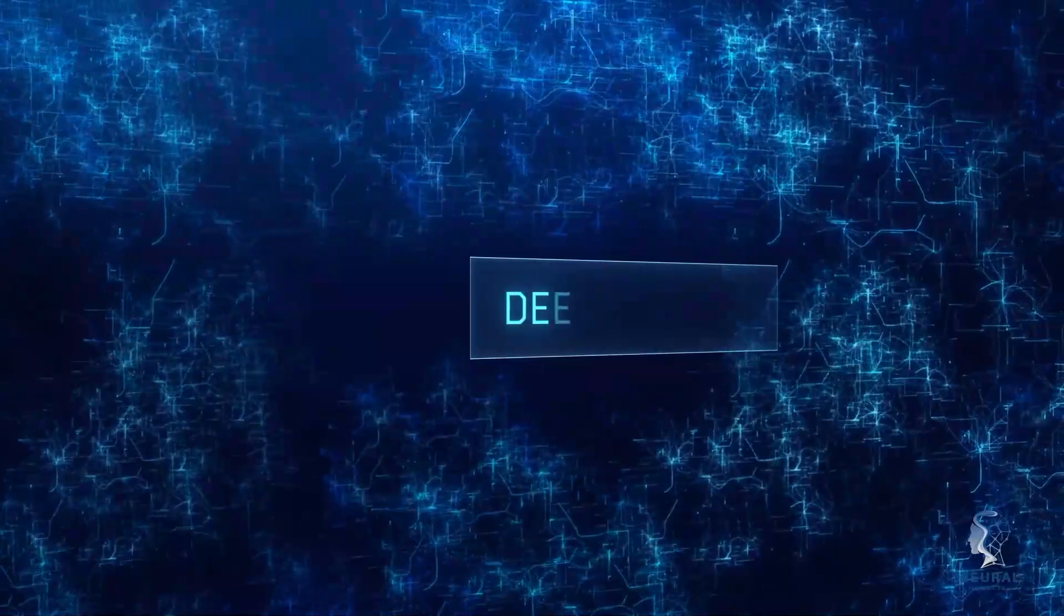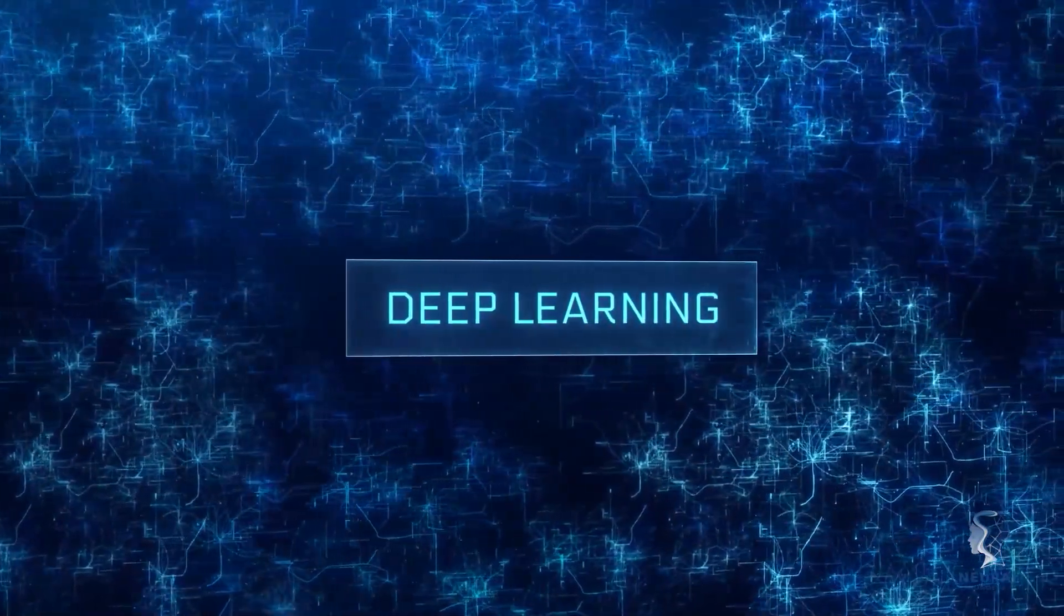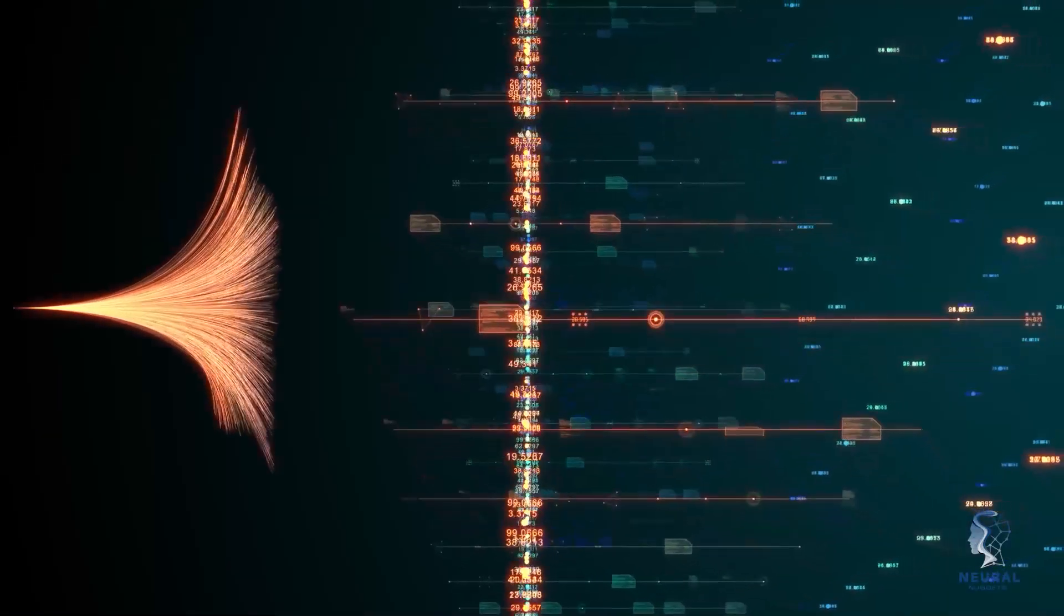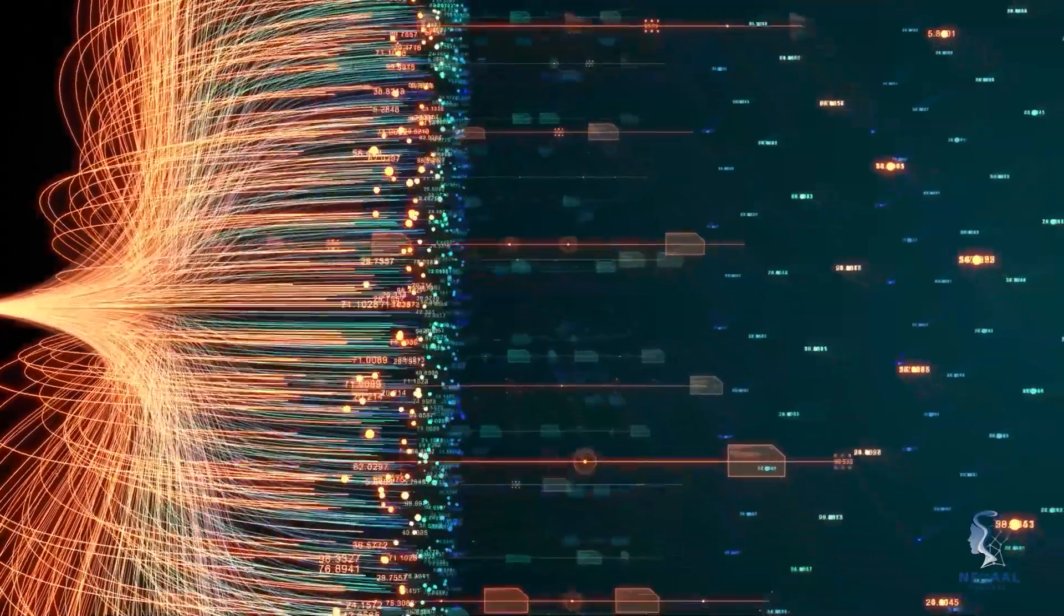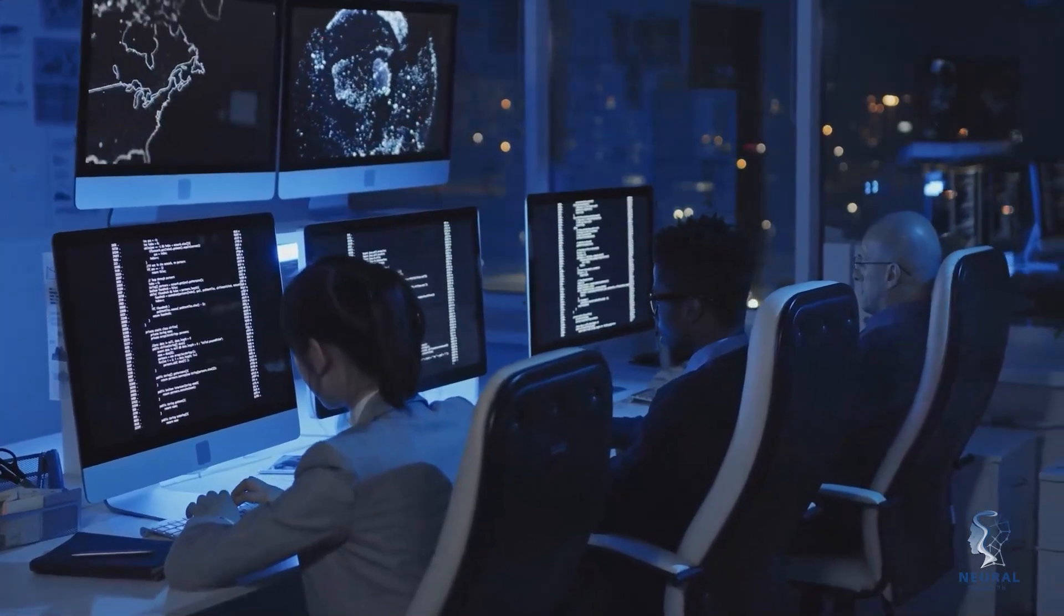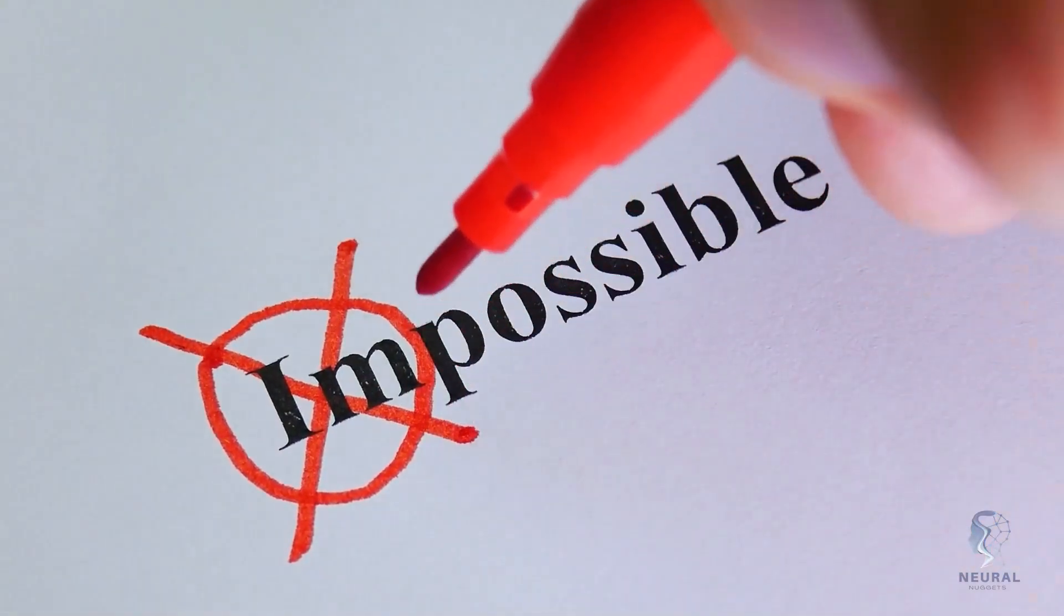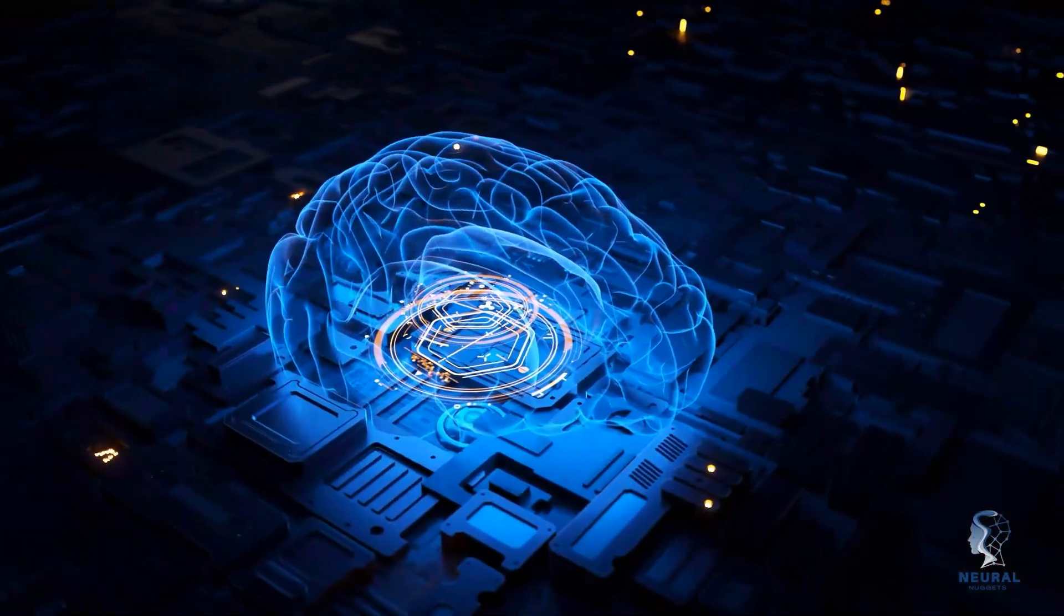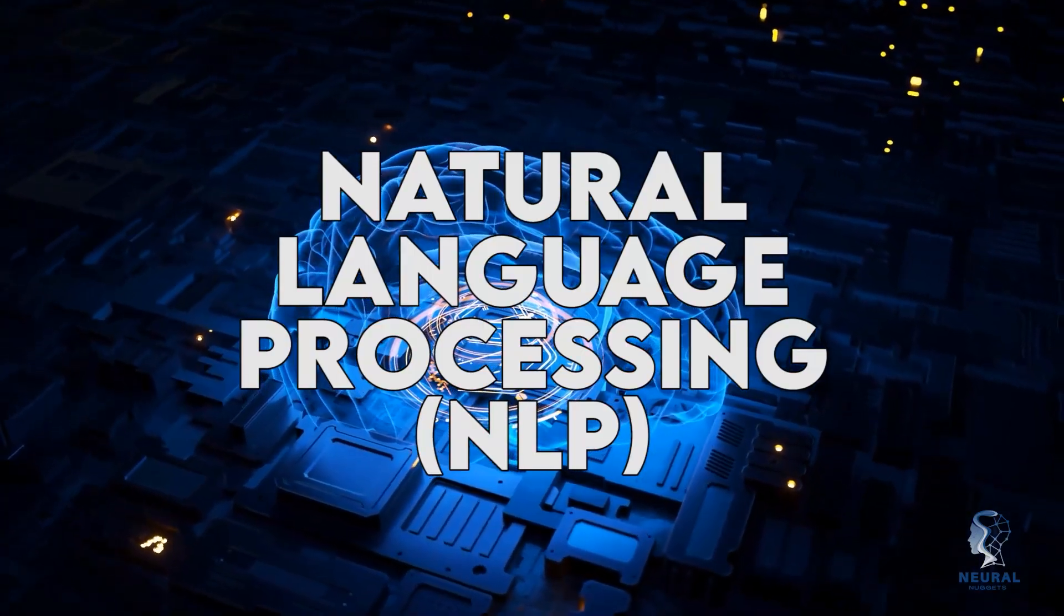One of the most exciting advancements in AI is deep learning. Deep learning is a subset of machine learning that uses complex neural networks to simulate the way the human brain processes information. This technology has enabled computers to learn from vast amounts of data and make predictions with a level of accuracy that was once thought to be impossible.